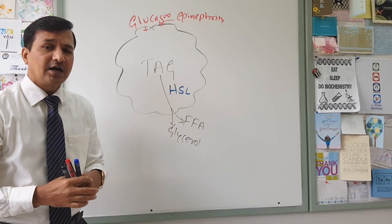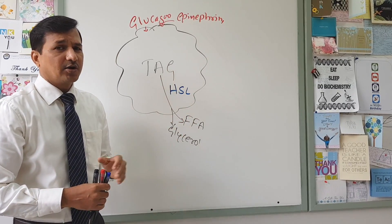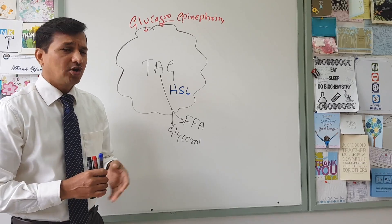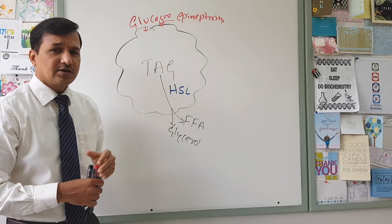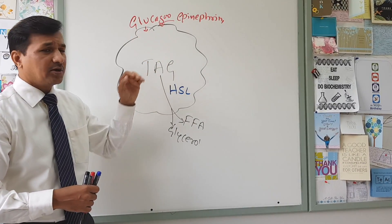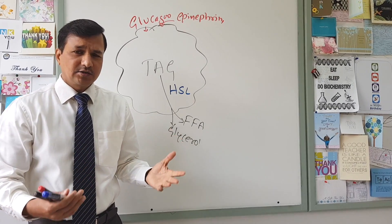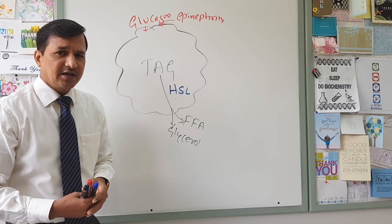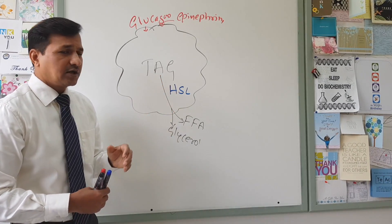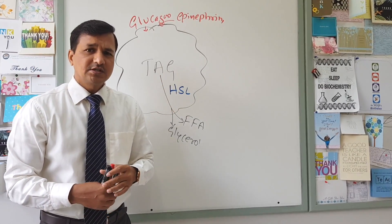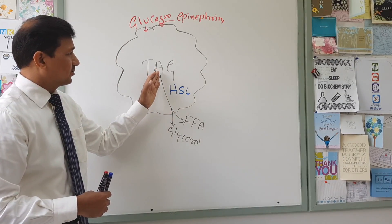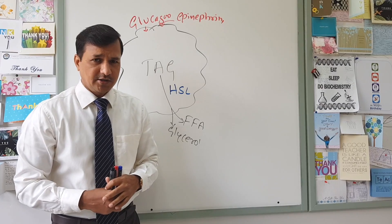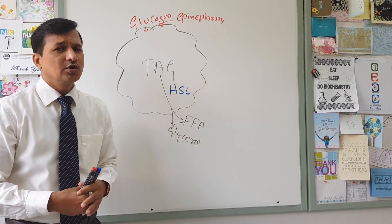Protein kinase A phosphorylates hormone-sensitive lipase, making it active. Active hormone-sensitive lipase again breaks down triacylglycerol into free fatty acids and glycerol — that is lipolysis mediated by epinephrine. So the mechanism of glucagon and epinephrine is very similar: both bind to G protein-coupled receptors, activate adenylyl cyclase, activate PKA, which then activates hormone-sensitive lipase to break down triacylglycerol.